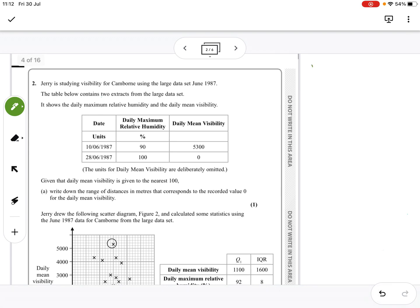You would assume if it's to the nearest 100 that this would be 0 to 50, and it kind of is. But they want the answer in meters, and daily mean visibility is in decameters.